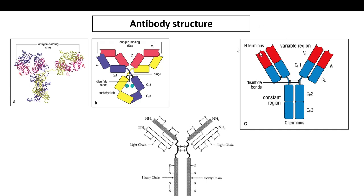In the immunoglobulin superfamily there are two kinds of domains: the IgV domain, which is the immunoglobulin variable domain, and the IgC domain, which is the immunoglobulin constant domain. One of the best examples of an immunoglobulin — also called an antibody — is shown here. On the left side marked as A, this is a crystal structure of how an immunoglobulin looks.